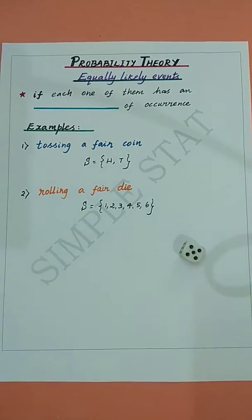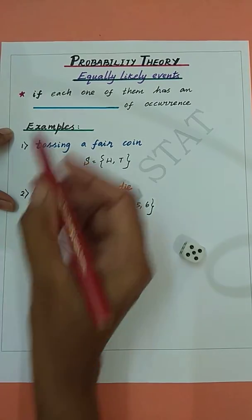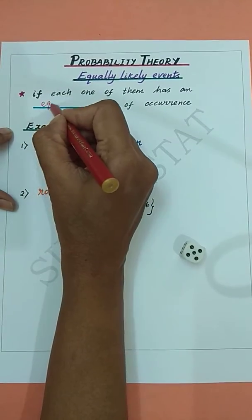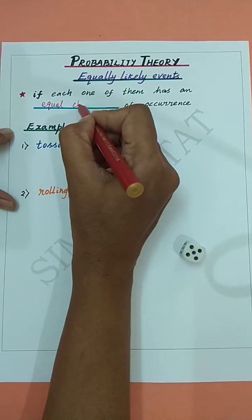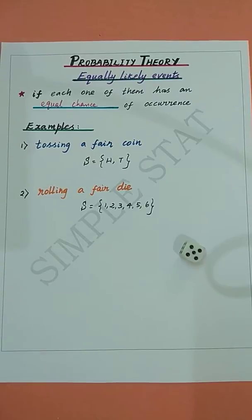Hence, two or more events are said to be equally likely if each one of them has an equal chance of occurrence. In other words, events are equally likely when one does not occur more often than the others.